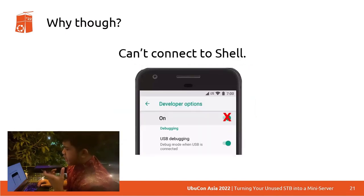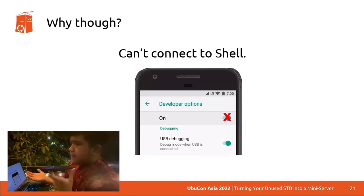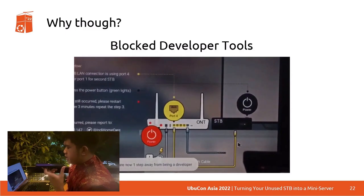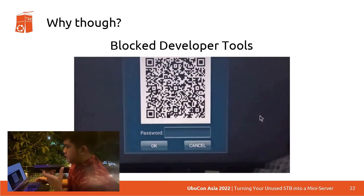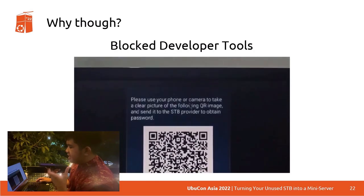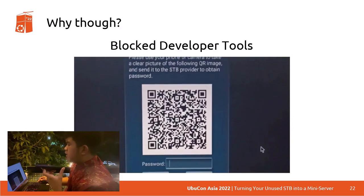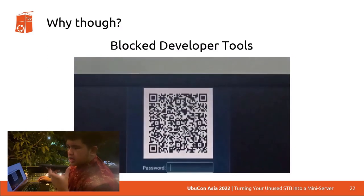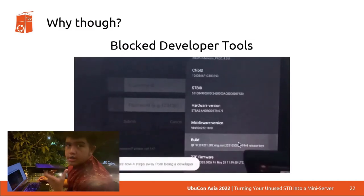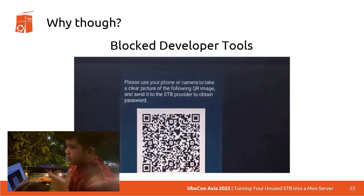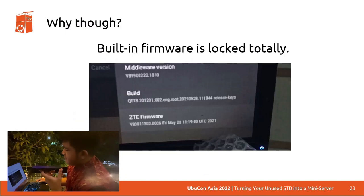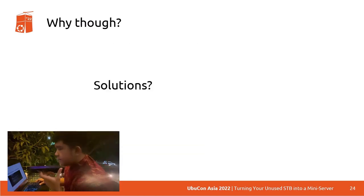I also can't connect to the shell terminal of the Android device. When I try to turn on developer options by clicking the build number, it asks me to provide a password and shows a QR code telling me to send it to the STB provider to receive the password. I kind of feel too lazy to do that because I believe they probably won't let me root the device anyway. So I need to think of another way. The built-in firmware is locked completely — I can't modify the firmware because every system customization is locked.